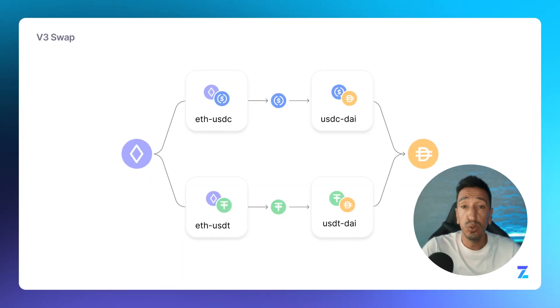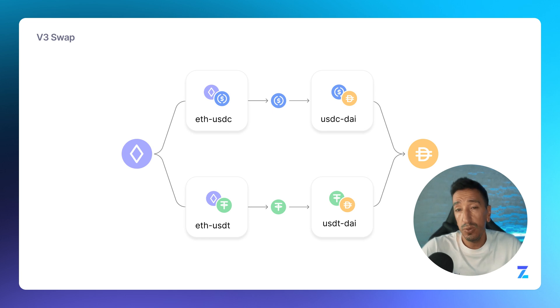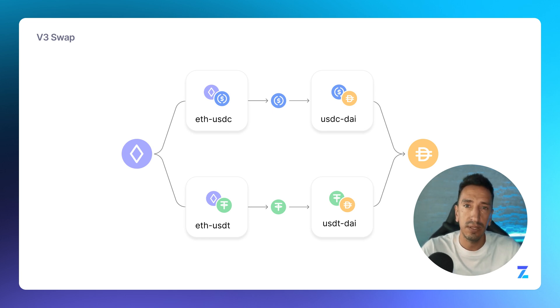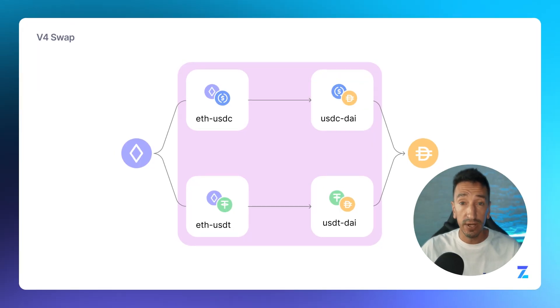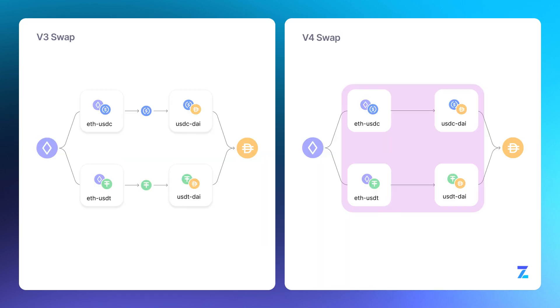The first feature I will introduce is the singleton architecture. In Uniswap v3, each pool has its own contract, so you have a lot of deployments and as a result you have a high gas cost. Uniswap v4 changes this approach by having one pool manager that handles all of the pools in a single contract.